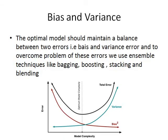The optimal model should maintain the balance between two errors, i.e., Bias and Variance. When there is an error in Bias and Variance in our model, we have to overcome this problem. This problem is overcome by using Ensemble Techniques like Bagging, Boosting, Stacking, and Blending.